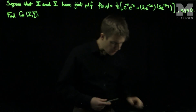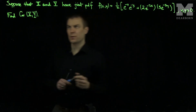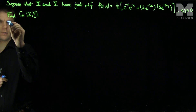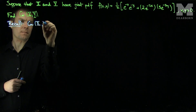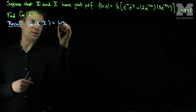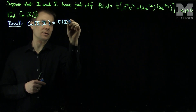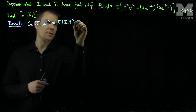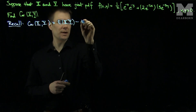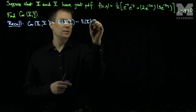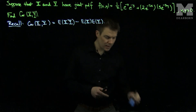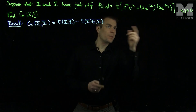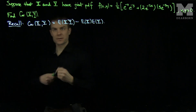Recall that the covariance of x and y is the expected value of x times y, minus the expected value of x times the expected value of y. And we have the PDFs, so we can simply integrate these things.